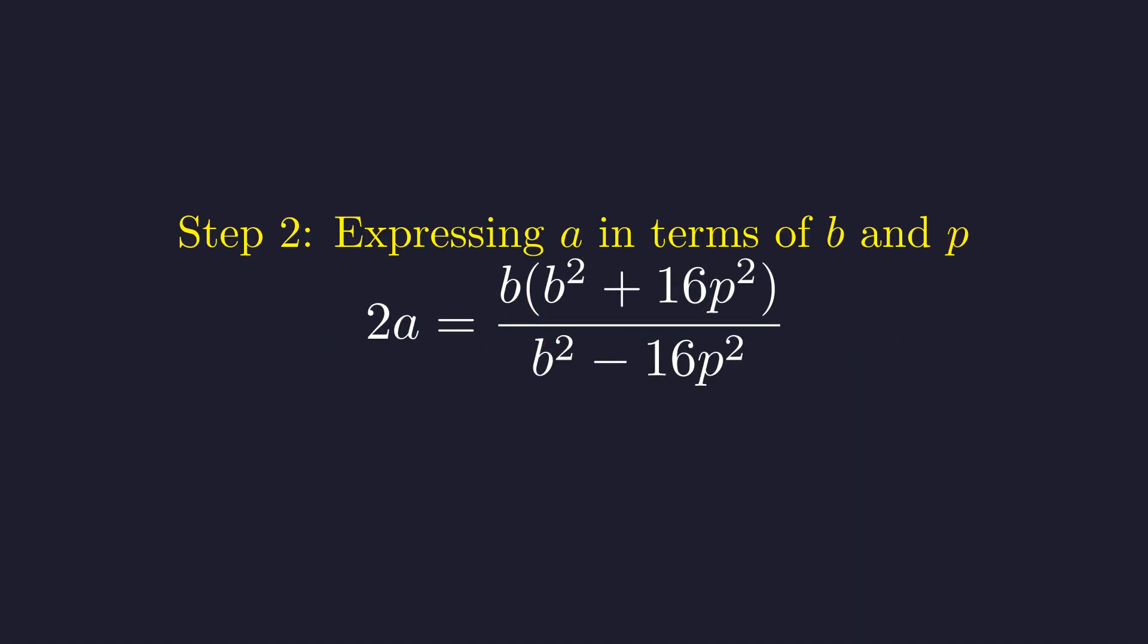Since a has to be a positive integer, this whole right side must evaluate to a positive integer. This is where number theory starts to bite. We need this expression to give us a positive even integer.